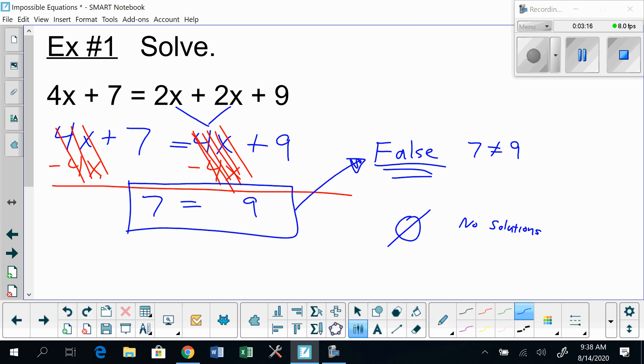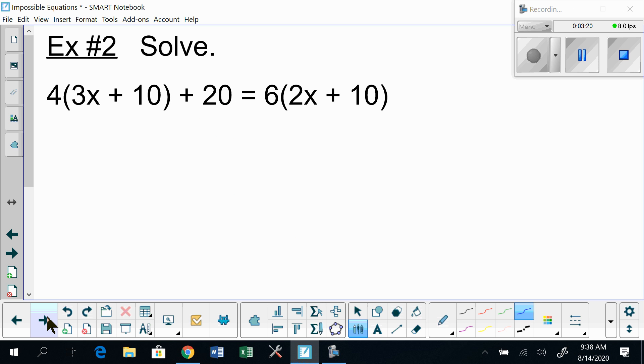Alright, let's go to example number two. Example number two is gonna look kind of similar. Let's start by distributing our 4 on the left-hand side, and over on the right-hand side we have a 6 to distribute. And then there's a 40 and a 20 that you can combine—the like terms. Those constant terms can be added together.